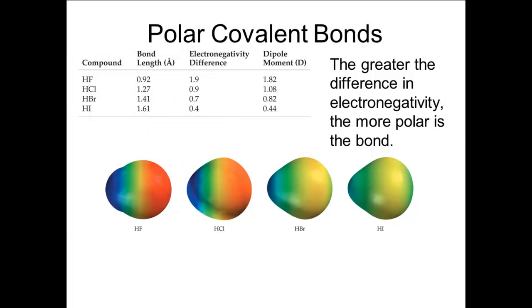The greater the electronegativity difference, the more polar the bond. This can be seen in comparing the electronegativity differences and dipole moments of the molecules HF, HCl, HBr, and HI, as seen in the table. As the electronegativity difference gets larger, the dipole moment gets larger.